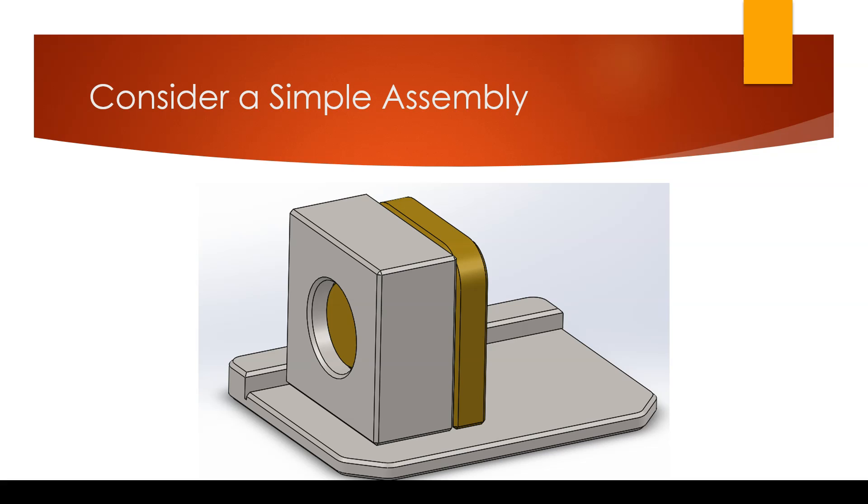The bottom surface needs to be flat so that it can be leveled and not rock. The left surface needs to be perpendicular to the bottom surface to properly align with the mating part, and the front face likewise perpendicular to the bottom and left surfaces to become flush with the mating part. Notice the use of terms that signify geometric tolerance types in our description of the design requirements.